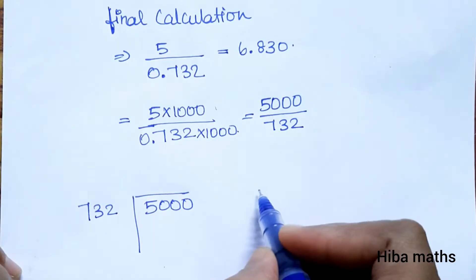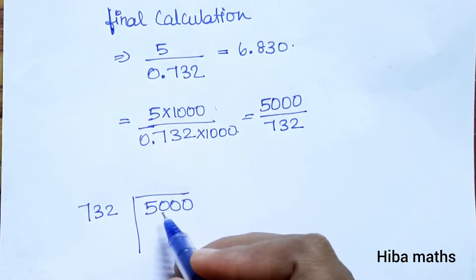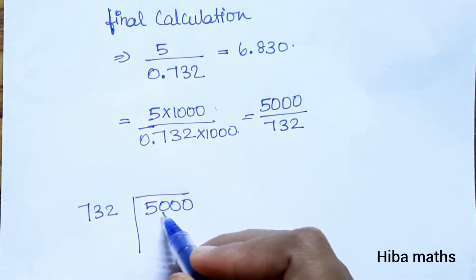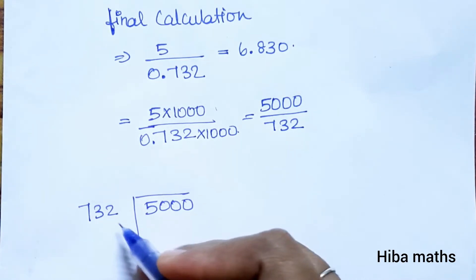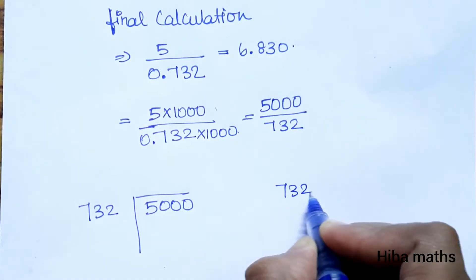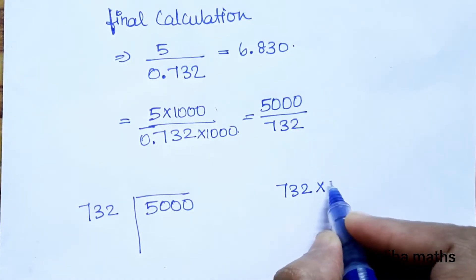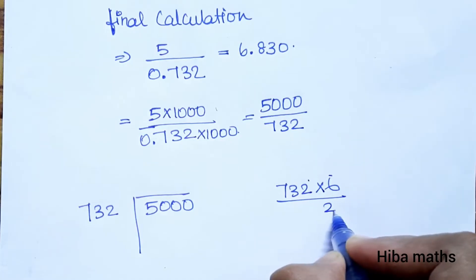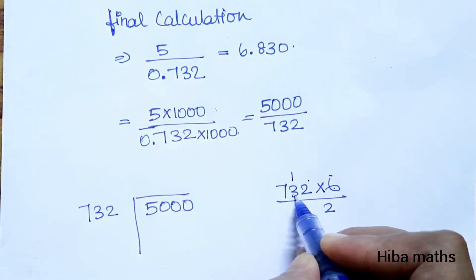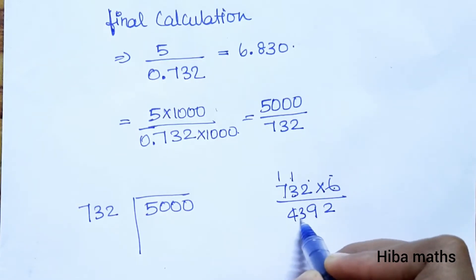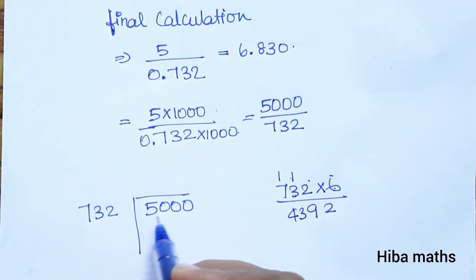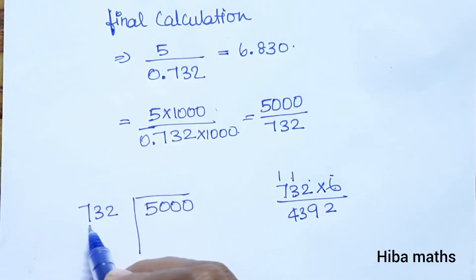Now, 732 into 5,000. That gives us quotient digit 6. We try 6 times 732.